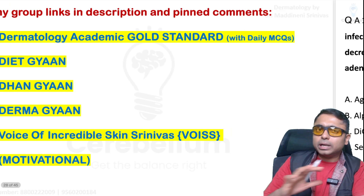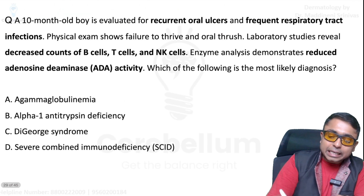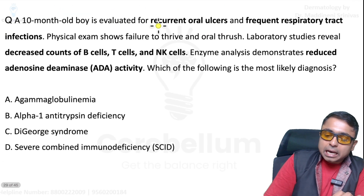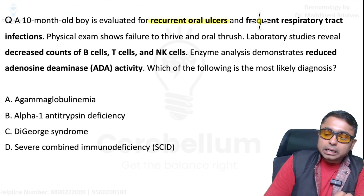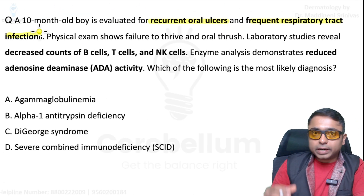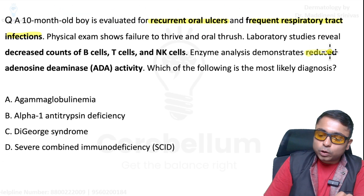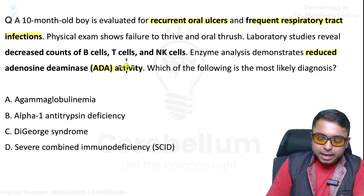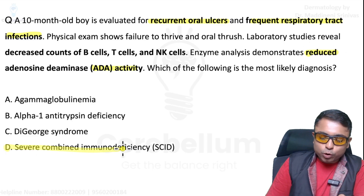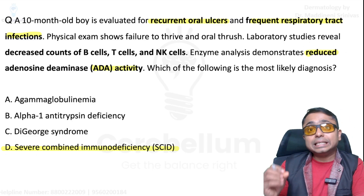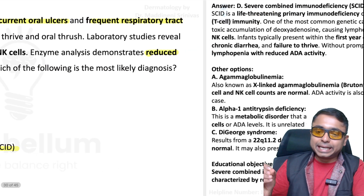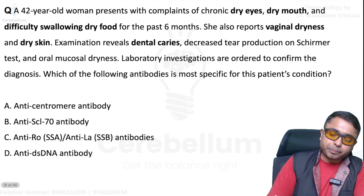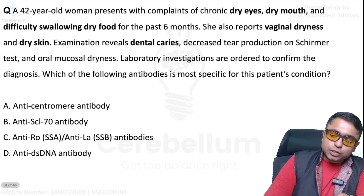Next question: recurrent oral ulcers, frequent respiratory tract infections, most importantly reduced ADA activity. By this time you should have answered it as SCID — severe combined immunodeficiency.